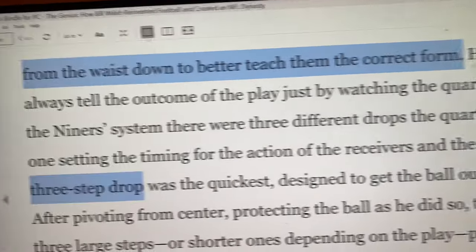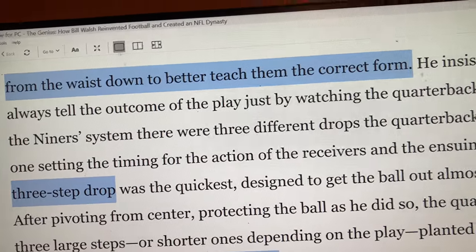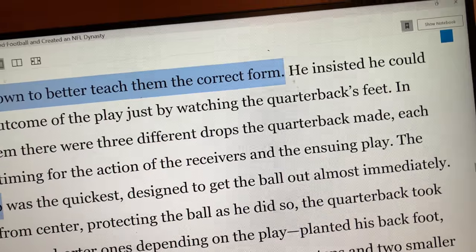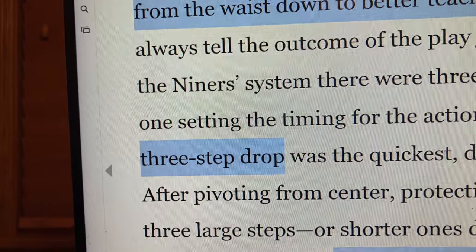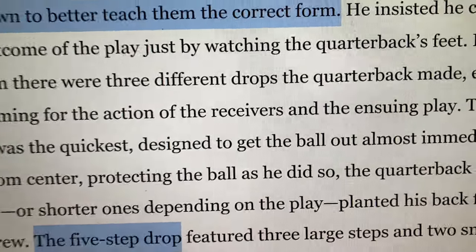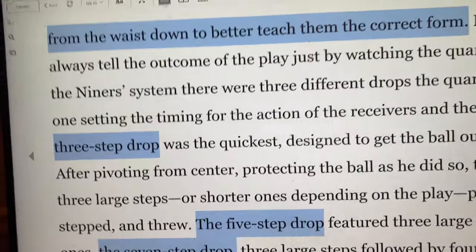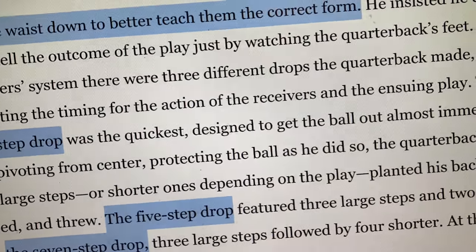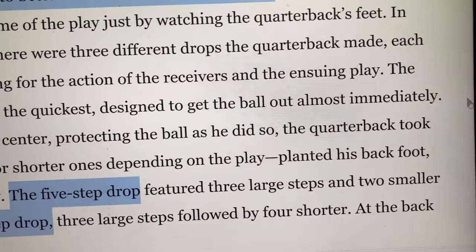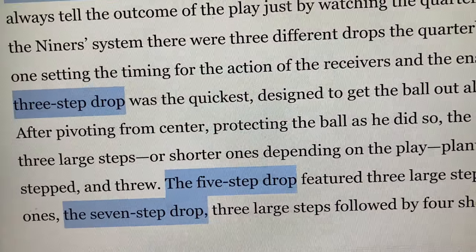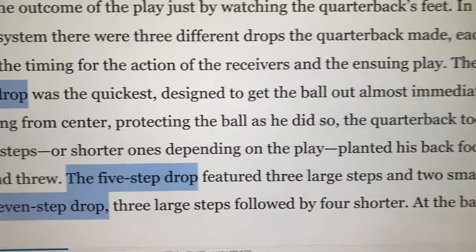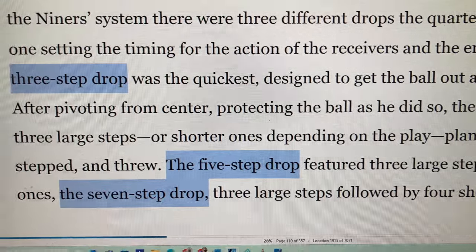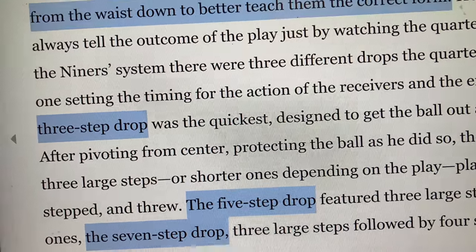The quarterback made each drop setting the timing for the action of the receivers and the ensuing play. The three-step drop was the quickest, designed to get the ball out almost immediately after pivoting from center. Protecting the ball as he did so, the quarterback took three large steps, or shorter ones depending on the play. He planted his back foot, then stepped going forward.